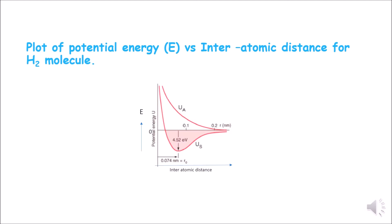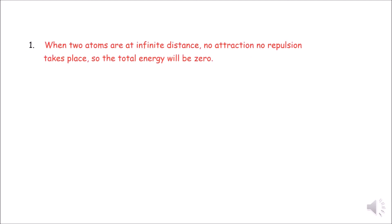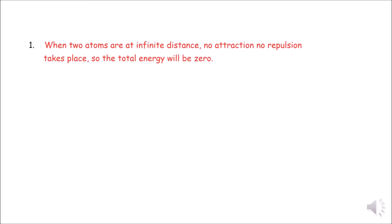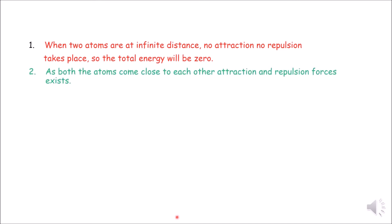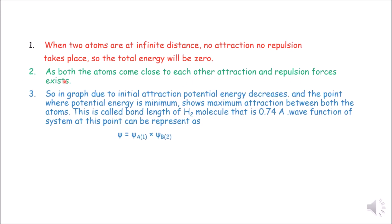I have explained three conditions. First, when two atoms are at infinite distance, no attraction and no repulsion takes place, so the total energy will be zero. Second, as both atoms come close, attraction and repulsion forces exist. Third, due to initial attraction the potential energy decreases, and the point where potential energy is minimum shows maximum attraction — this is called the bond length of H2 Molecule, which is 0.74 Ångström.